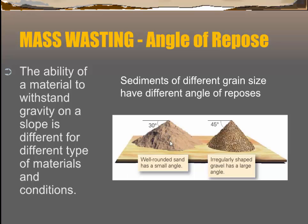Materials that are quite fine — like grains of sand or clay — will have a much smaller angle of repose compared to particles that are much larger, like pebbles, large boulders, or things with regular shapes. You can actually have sheer slopes with rocks compared to shallower slopes with sand.